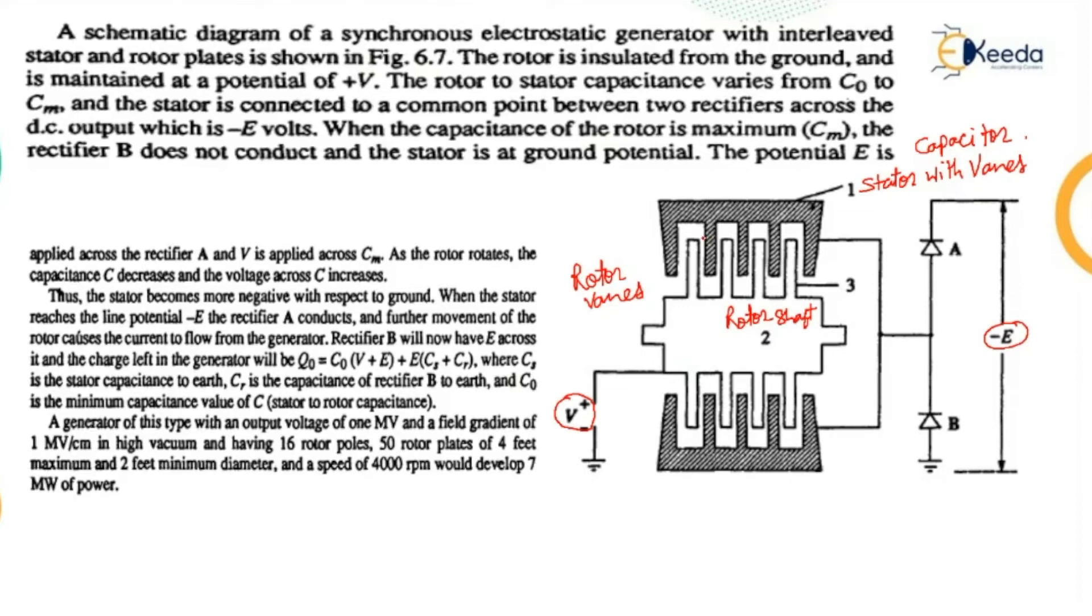The rotor is insulated from the ground and is maintained at a potential of plus V. The rotor to stator capacitance varies from C0 to Cm, and the stator is connected to a common point between two rectifiers, A and B.